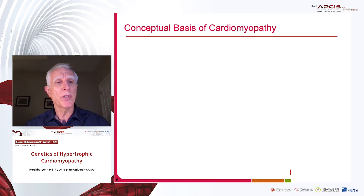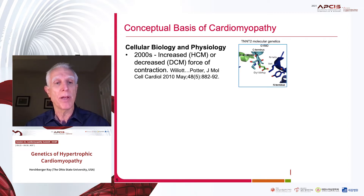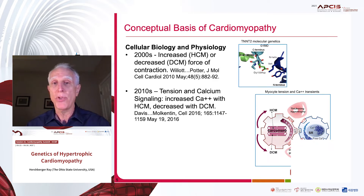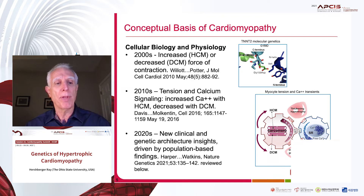The conceptual basis of cardiomyopathy also took cellular and physiological insight. HCM was considered as increased force of contraction, while DCM was decreased force of contraction, with some elegant studies by the Potter group. This was coupled to tension and calcium transients, with increased calcium signaling associated with hypertrophic cardiomyopathy, and decreased calcium signaling with dilated cardiomyopathy.